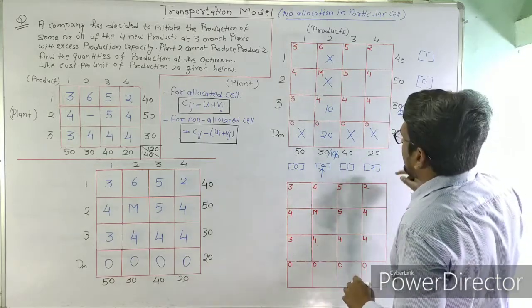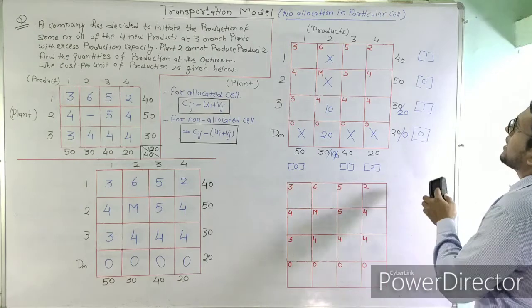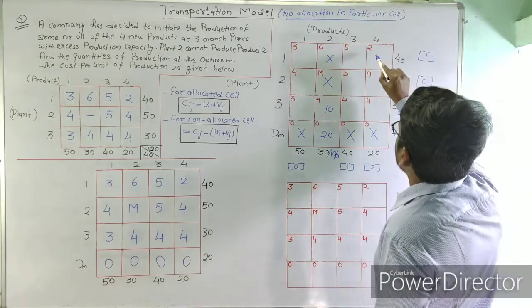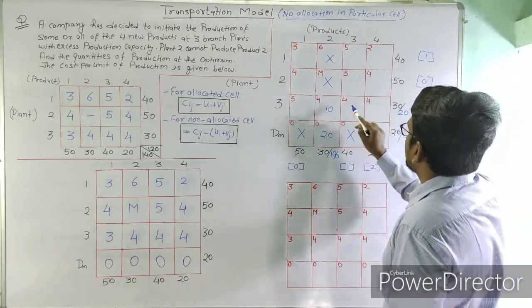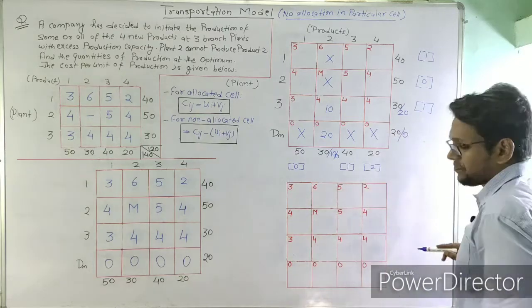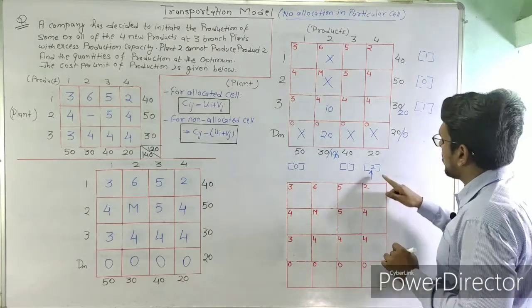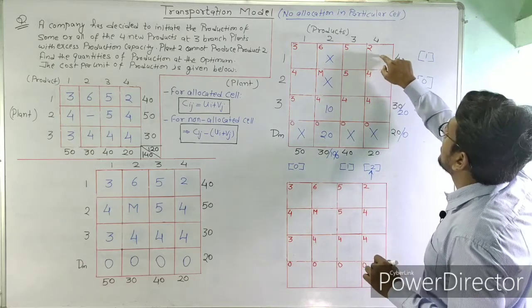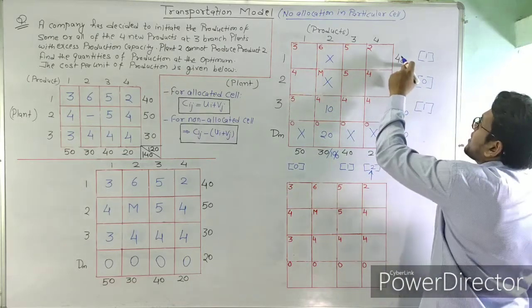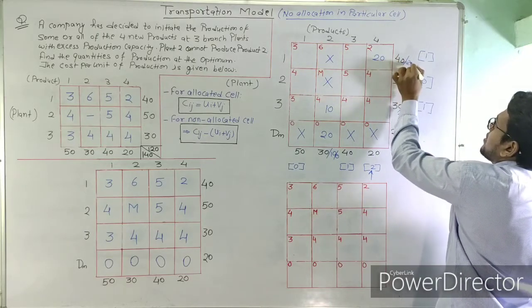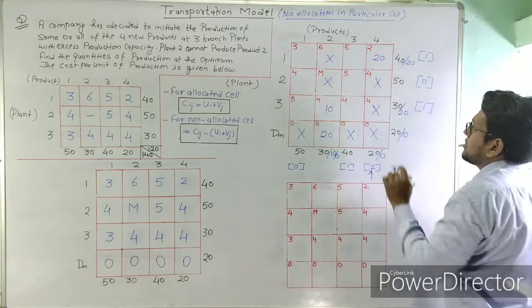Recalculating again: row penalties are 1, 0, and 1. The maximum penalty occurs in one column, where the lowest transportation cost cell is selected. Demand is 20 and supply is 40, so we allocate 20 units. The column demand becomes 0, supply reduces to 20, and that column is eliminated from further iterations.